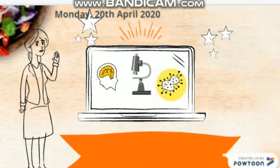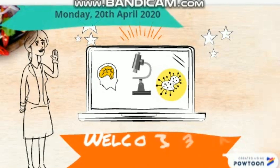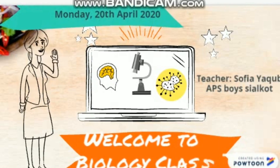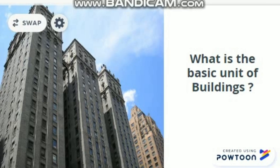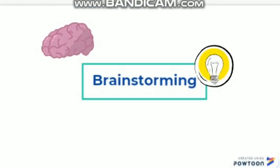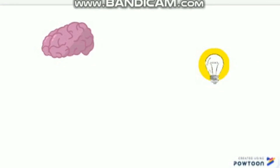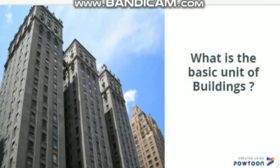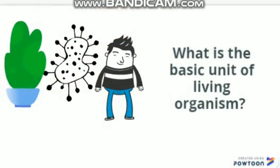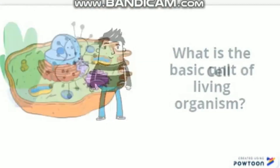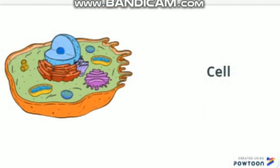Assalamu alaikum students, welcome to biology class. This is Miss Sophia Yakub from APS Boys Cell Court. Today is Monday, 20th April 2020. What is the basic unit of buildings? The answer is brick. And what is the basic unit of a living organism? The answer is cell. As buildings are made up of bricks, living organisms are made up of cells.